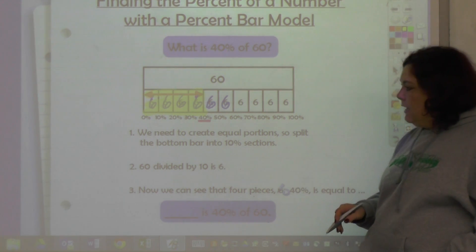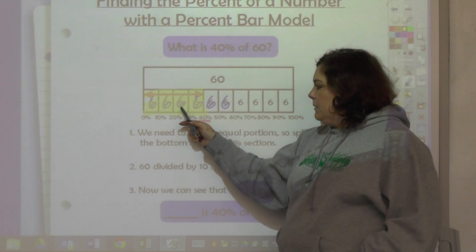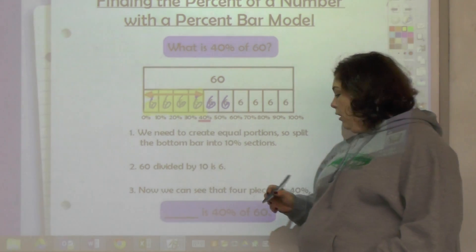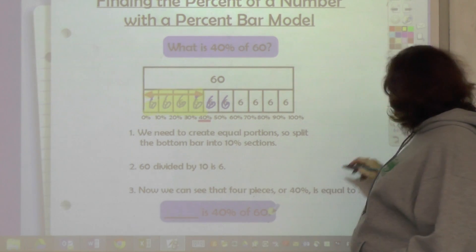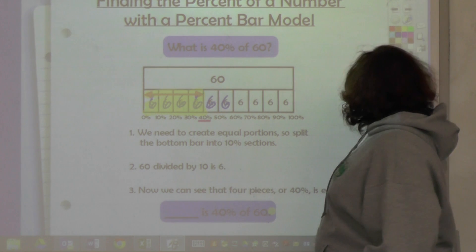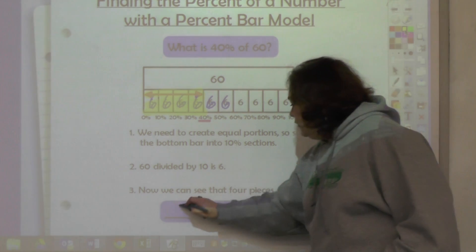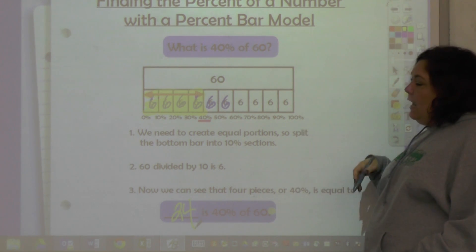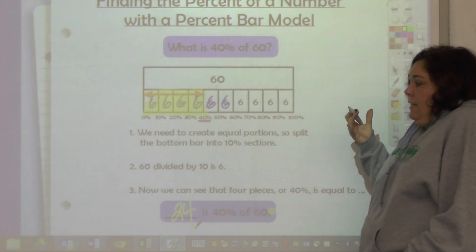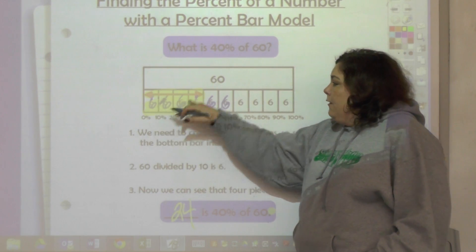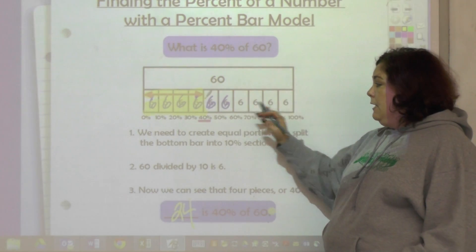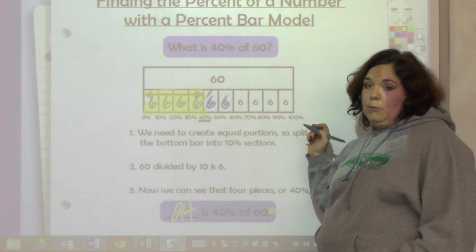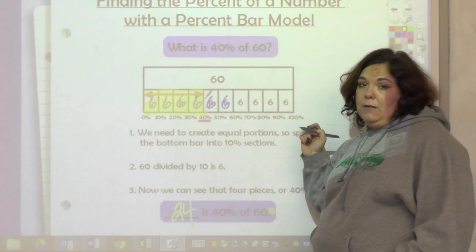And six plus six plus six plus six, or six times four, is 24. So the answer is 24 is 40% of 60. And again, what math have we done other than labeling our model and saying 60 divided by 10 parts is six for each part, four parts would be 24?